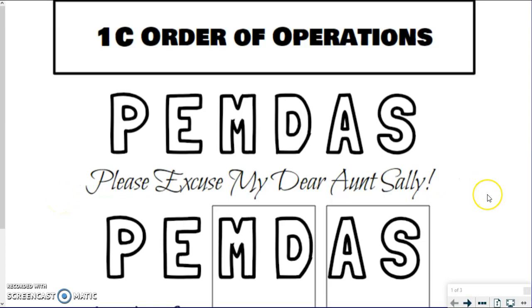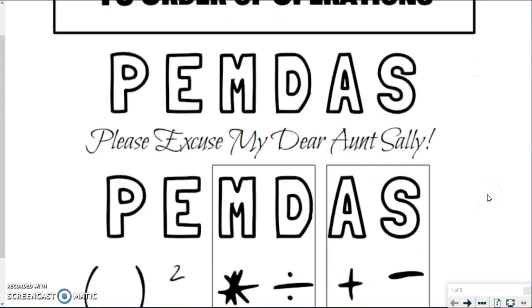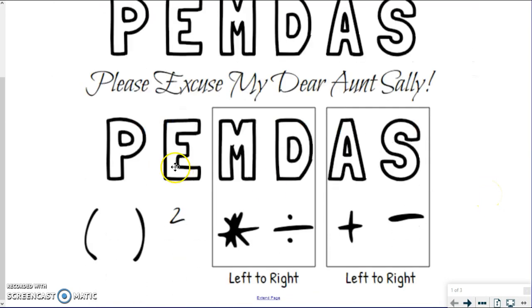to remember that order of operations. So what each of these means is P stands for parentheses, so you always do parentheses first if they're there. E stands for exponent, so no matter what the exponent is, if you have one, that's what you would do next. So parentheses first, then exponents.